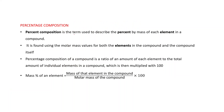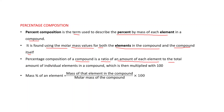Percentage composition is the term used to describe the percent by mass of each element in a compound. It is found using the molar mass values for both the elements in the compound and the compound itself. Percentage composition is a ratio of the amount of each element to the total amount of individual elements in a compound, multiplied by 100. The formula is: mass percent of an element equals mass of that element in the compound divided by molar mass of the compound, multiplied by 100.